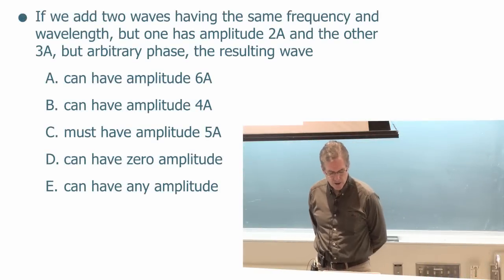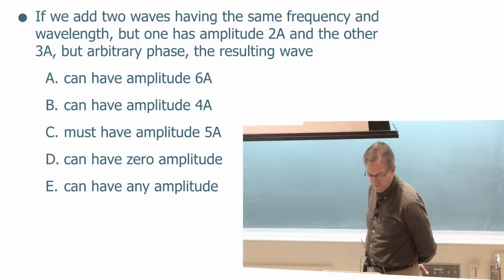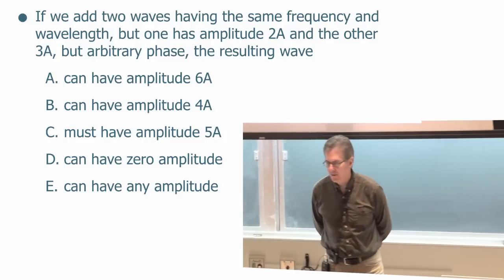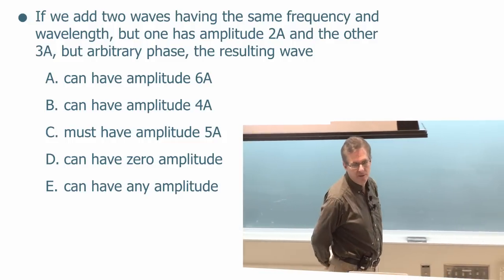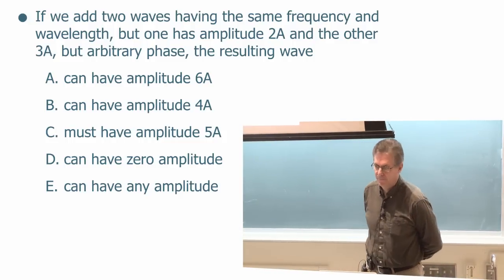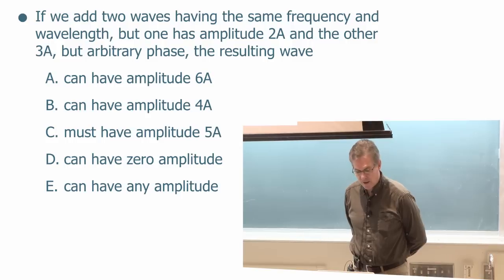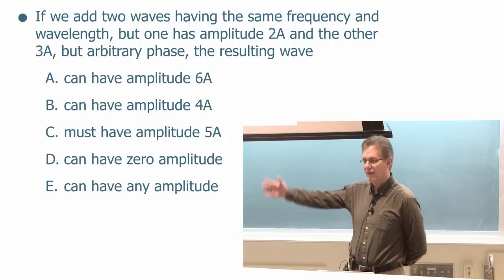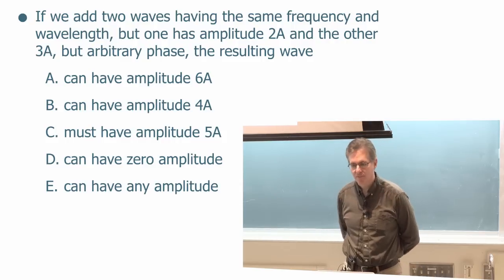Okay, let's think about it. Oddly, the winner in the last lecture was one of these that we could eliminate immediately. Which one do you think you can eliminate right away? A? Well I think we can eliminate E right away, right? Because you can't have any amplitude like a million or something.